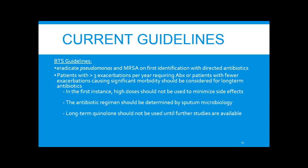Current overall guidelines focus on eradicating Pseudomonas and MRSA on first identification, as studies show patients with bronchiectasis and these bacteria have faster FEV1 decline and worse quality of life. Patients with three exacerbations per year requiring antibiotics, or fewer but with significant morbidity, should be considered for long-term antibiotics. Treatment should be oral if possible and tailored by sputum microbiology. Long-term use of quinolones needs further study as there appear to be high rates of resistance.